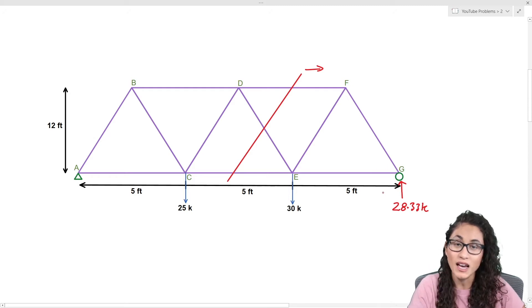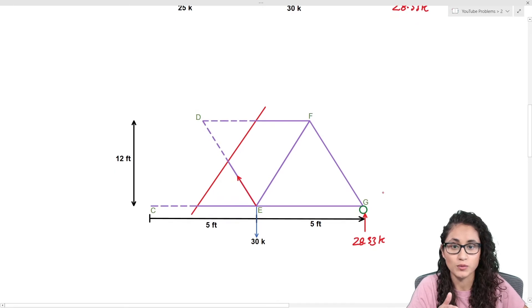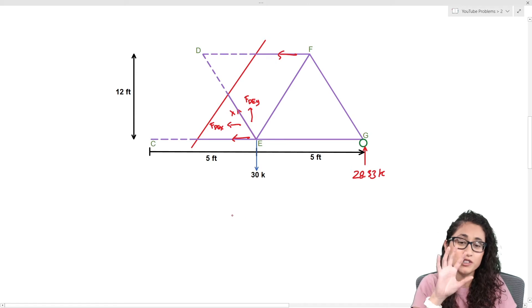The next step is we're going to draw all the forces that are going through the cut. Here we're gonna have force DF, this is force DE that's what we're trying to solve for, and then here we have force CE. As I mentioned, it would be easier for us to break this diagonal force into two components X and Y. Here we're gonna have FDE in the Y direction and this is going to be FDE in the X direction.